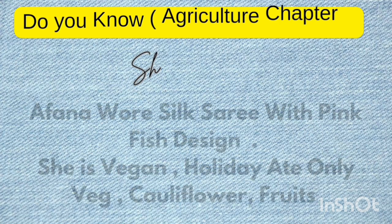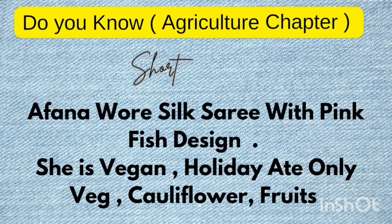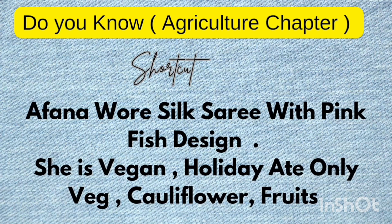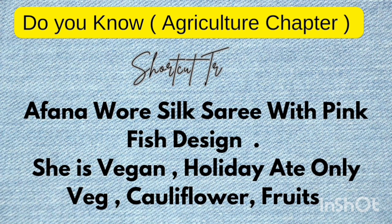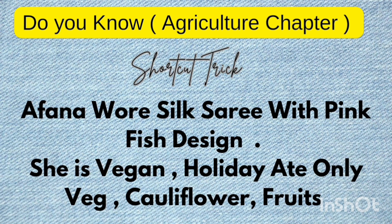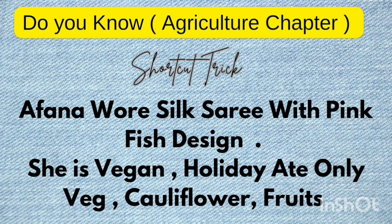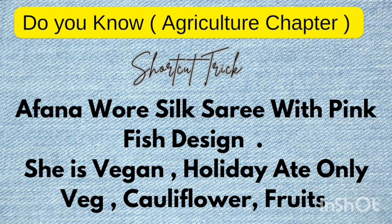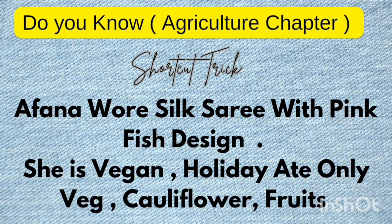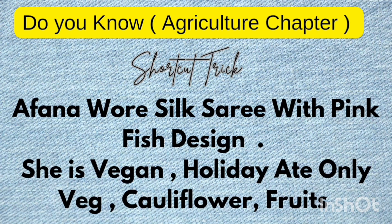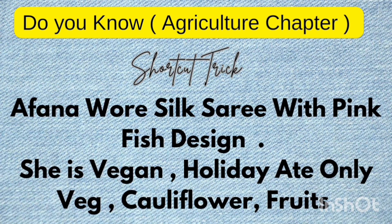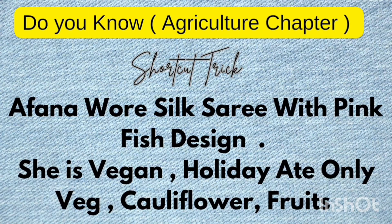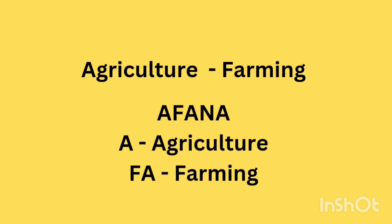Students, this sentence may be lengthy but once you imagine this you will understand. I'll repeat it once again: 'Afna wore a silk sari with pink fish design. She is vegan. During holiday she ate only vegetables, cauliflower, and fruits.' Hope you understood. Let's see the explanation.